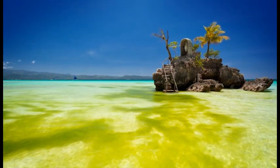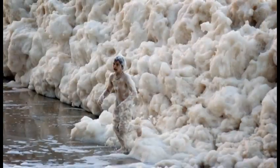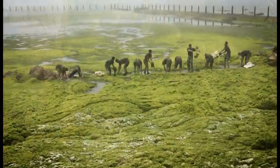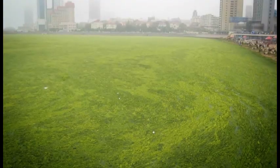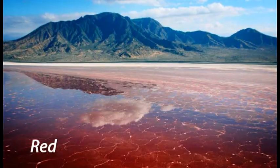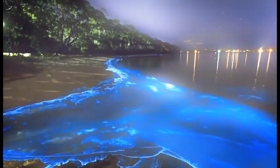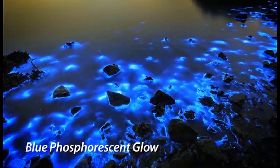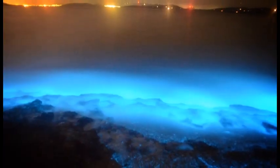Highly dense algal blooms can form streaks or slimy scums, foams, or grow in clumps and form thick mats that float and appear as discolored surface waters, ranging from white, green, yellow, red, or brown hues. At night, some algal blooms can also be seen as blue photofluorescent glows produced when bioluminescent algae are disturbed.